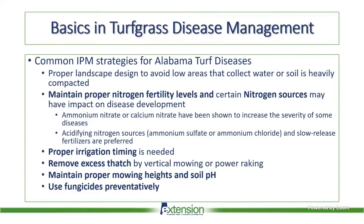In terms of managing turfgrass diseases, proper landscape design really goes a long way in minimizing turfgrass diseases, insect issues, and drainage issues — avoiding low areas that collect water or heavily compacted soil. You also want to maintain proper nitrogen levels and think about your nitrogen sources. Ammonium nitrate and calcium nitrate have been shown to increase the severity of some diseases like take-all root rot, whereas acidifying nitrogen sources such as ammonium sulfate or ammonium chloride and slow-release fertilizers are typically preferred as they don't increase your risk for those turfgrass diseases.